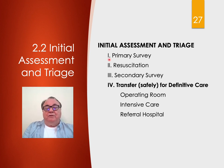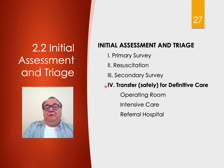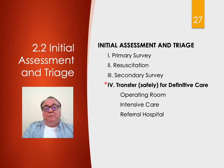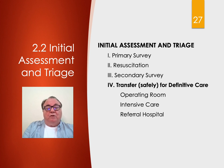After primary survey, resuscitation, and secondary survey, you now know what's going on with the patient and they need definitive care. Transfer them safely — you can't ignore them. Make sure everything remains stable, and if they destabilize, go back to the primary survey. Transfer for definitive care could be the operating room or the intensive care unit in your own institution, or if you're not capable of managing the patient, safely transfer them to a referral hospital.